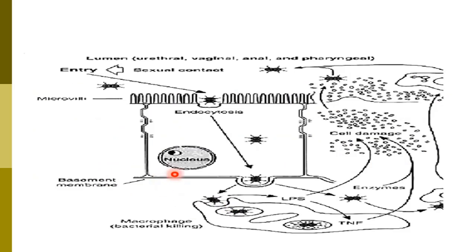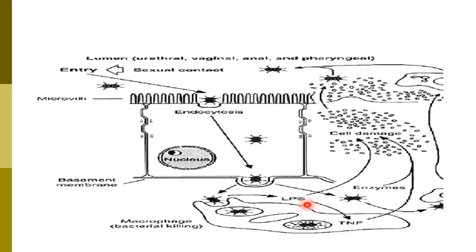In this figure, shown is the lumen — urethral, vaginal, and pharyngeal. After sexual contact, the microorganism enters and endocytosis occurs as an immune defense mechanism to engulf it. When the organism reaches the basement membrane, macrophages engulf it, and the lipooligosaccharide produced from Neisseria stimulates the production of tumor necrosis factor, causing cell damage.